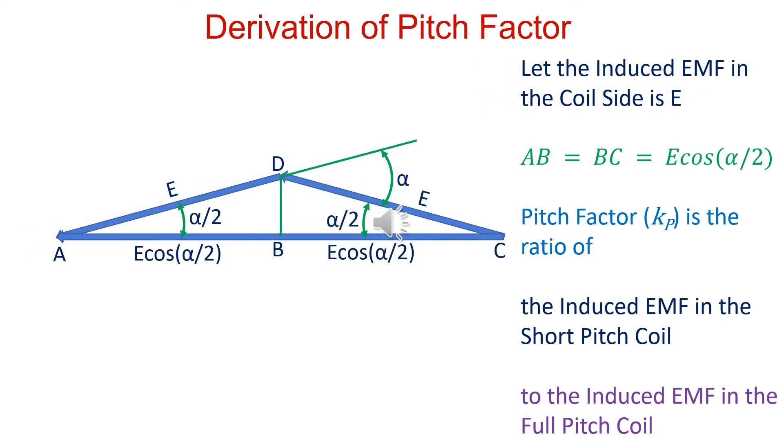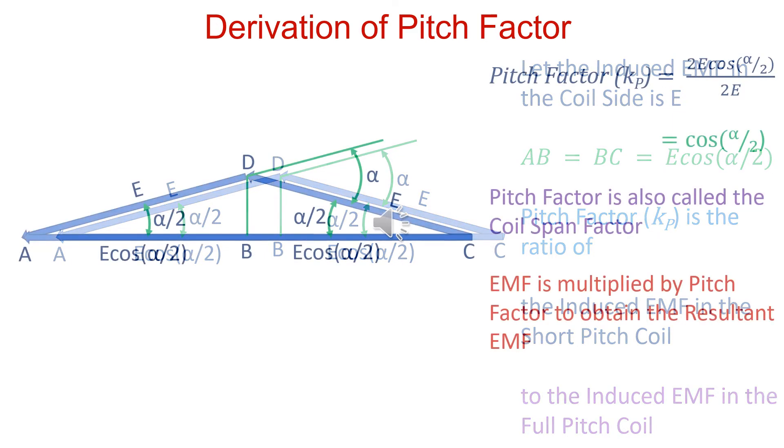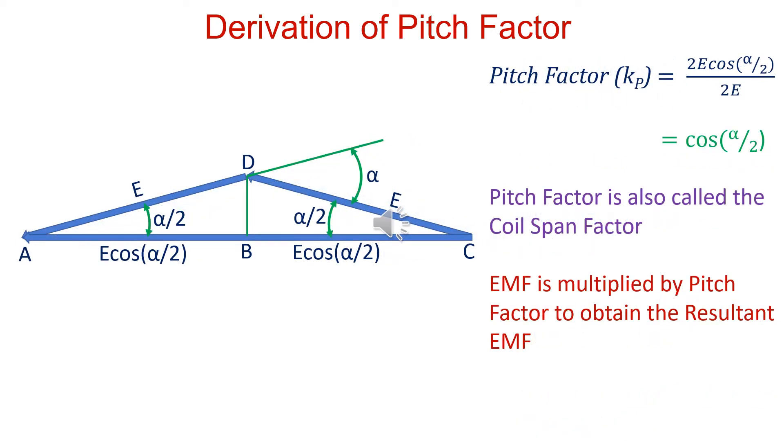Pitch factor is defined as the induced EMF in the short pitch coil divided by the induced EMF in the full pitch coil. Pitch factor is equal to cos alpha by 2. EMF is multiplied by pitch factor to obtain the resultant EMF.